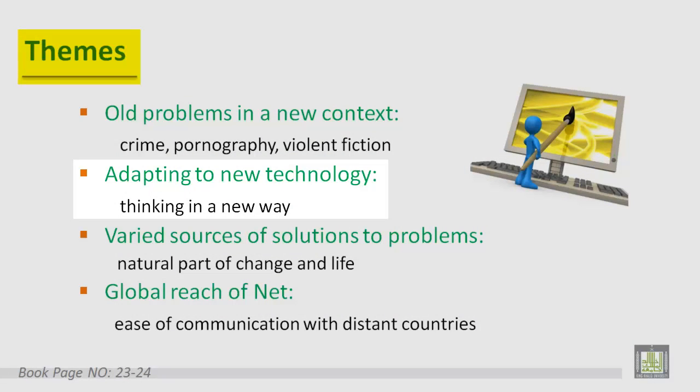The second point is adapting to new technologies. Changes in technology require adaptive changes in laws, social institutions, business policies, personal skills, attitudes, and behavior. There are also varied sources of solutions to problems — solutions for problems that result from new or improved technology include the market, management policies, education and public awareness, volunteer efforts, and law.